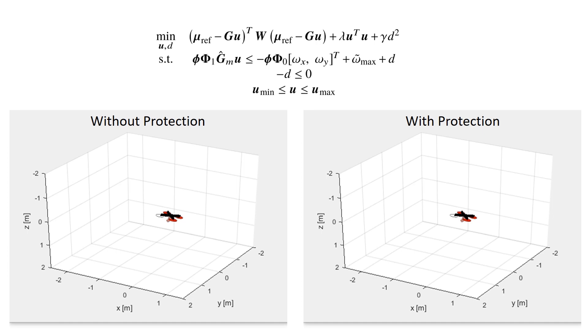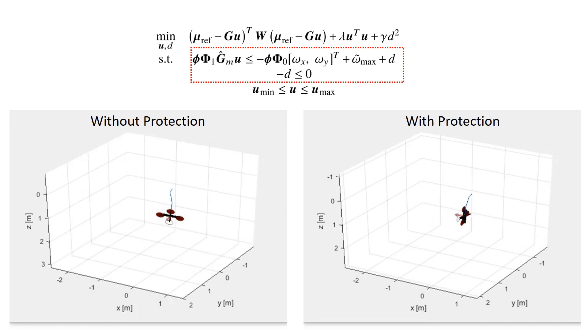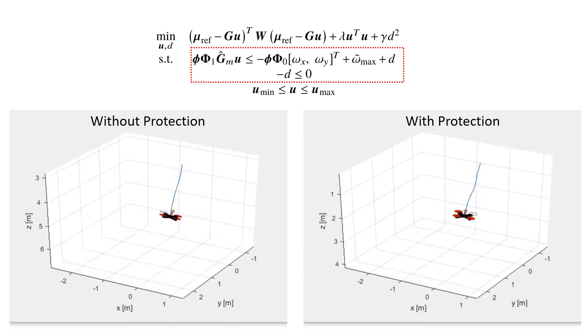In this video, we compare the recovery procedure in the simulation between different allocation methods with and without the envelope protection constraint. Both simulations are initialized from an upside-down pose. On the left-hand side, without envelope protection, the drone continues rotating about the undesirable direction and fails to recover.